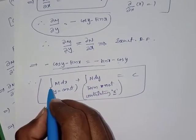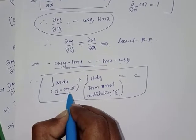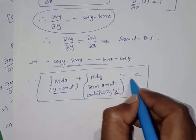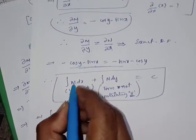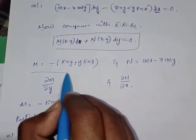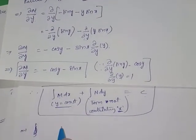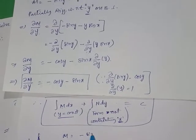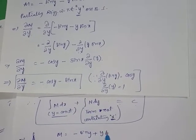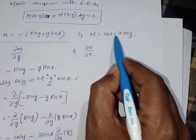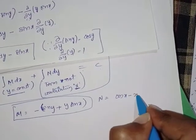Now, the formula for an exact differential equation is: ∫M dx (treating y as constant) + ∫N dy (for terms not containing x) = c. M = -sin y + y sin x and N = cos x - x cos y. Substitute into the formula.